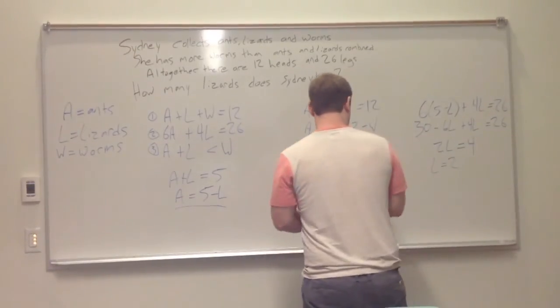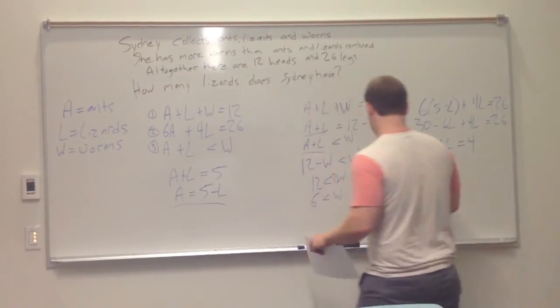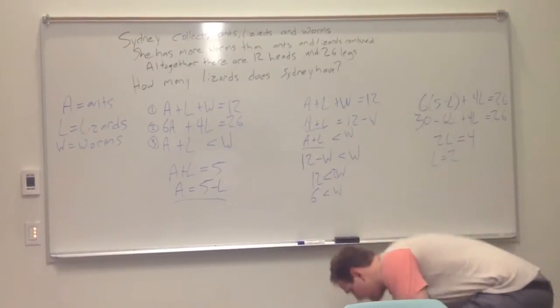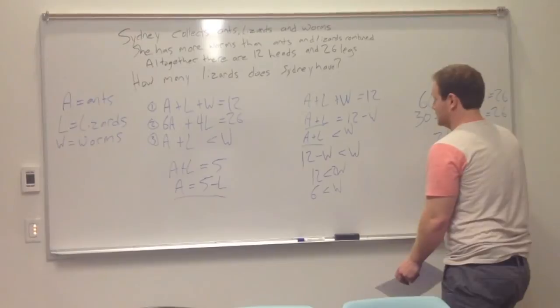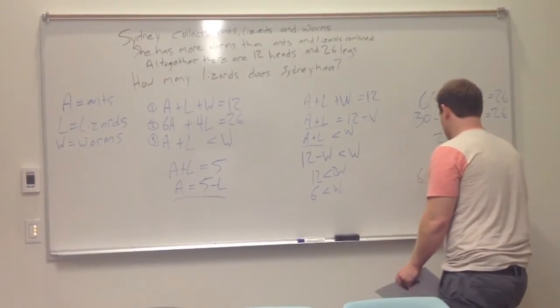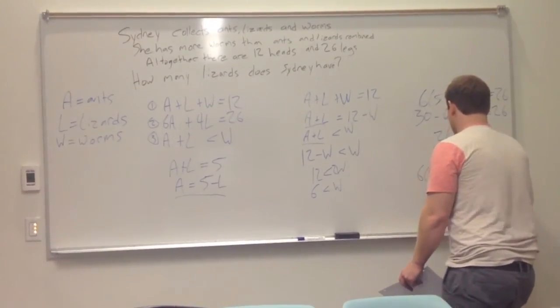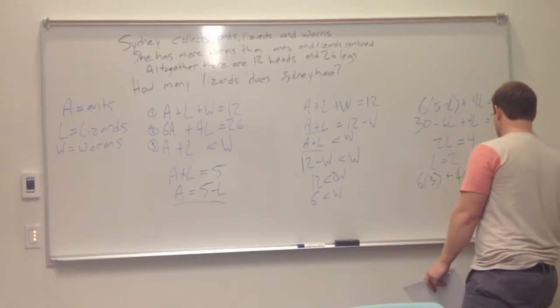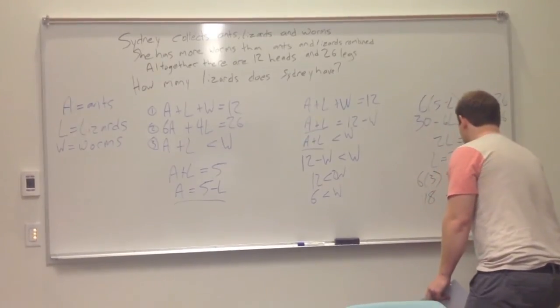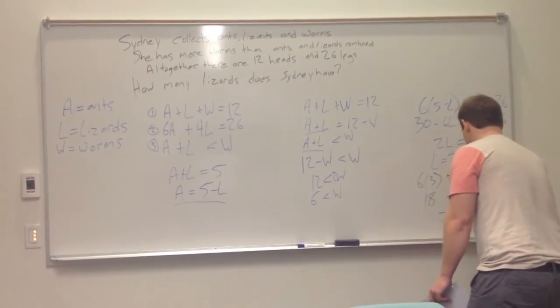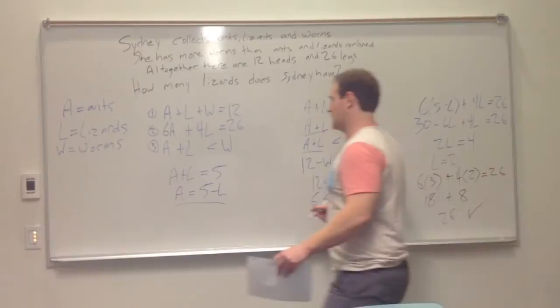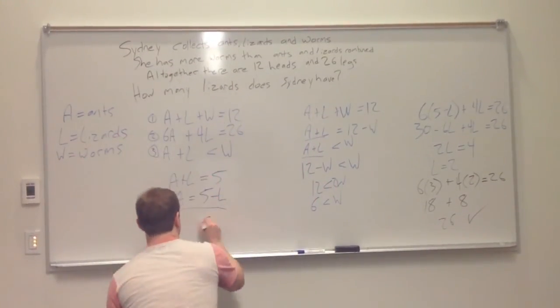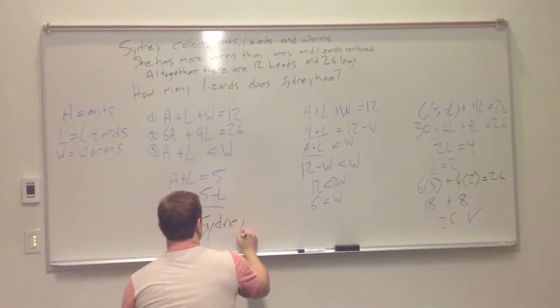Now, we can even do a check on this one, using the same equation, substitute the 2 back here. And then we get 18 + 8, which is also 26. That is correct. And then after that we just need a final statement, how many lizards does Cindy have. We check and we know that Sydney has 2 lizards.